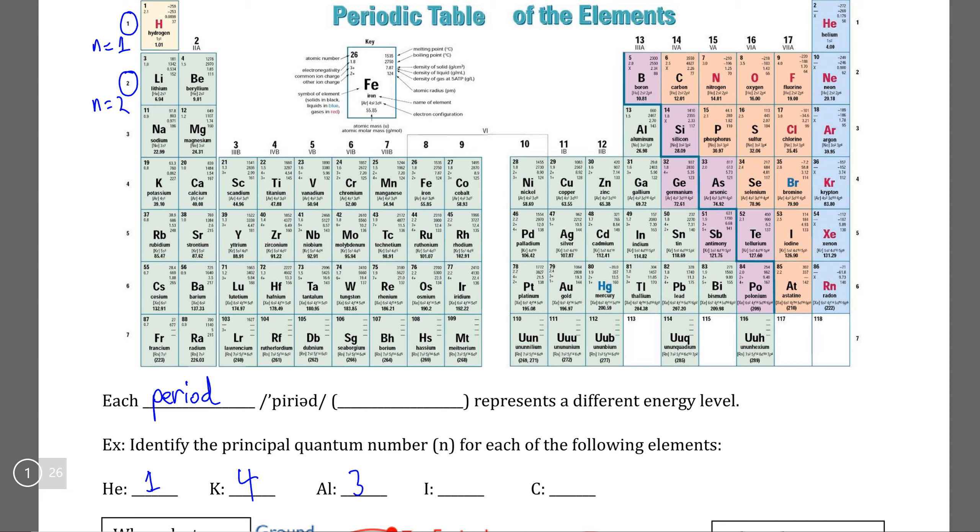We can do the same with iodine: one, two, three, four, five. We see that iodine is in the sixth period. And going back to carbon: one, two, we see that carbon is in the second period. So again, in summary, to determine which energy level an element occupies, all we need to do is find which period it occupies.